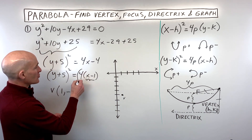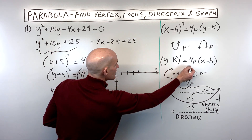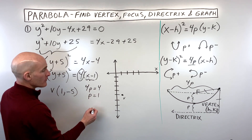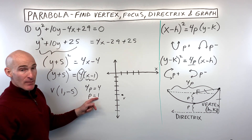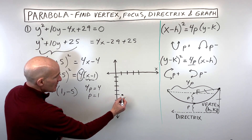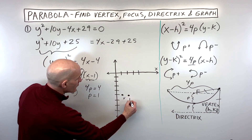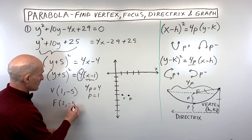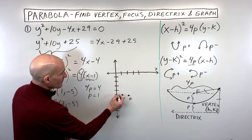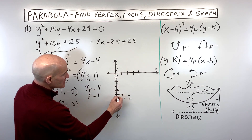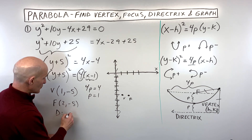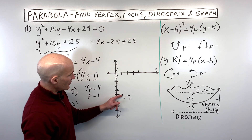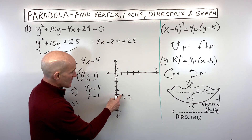To find P, set the coefficient 4 equal to 4p: 4p = 4, so p = 1. Since p is positive, the parabola opens to the right. Going 1 space to the right of the vertex gives the focus at (2, −5). Going 1 to the left gives the directrix, which is the vertical line x = 0. The distance from the vertex to the directrix and the vertex to the focus are both equal to p = 1.